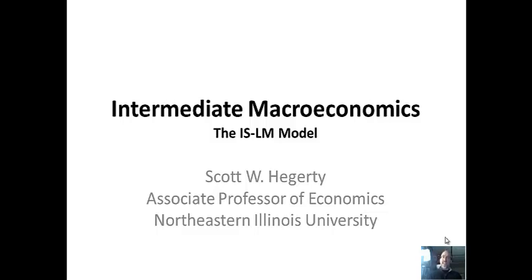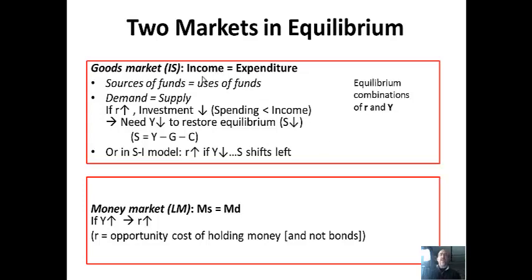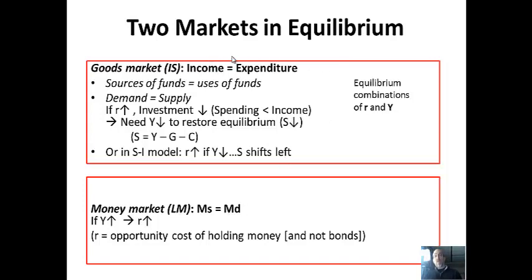To get started, I'll lay out the idea of simultaneous equilibrium. We have two markets: the goods market, which is aggregate demand for real goods and services, and the money market, which is supply and demand for money. The goods market moves more slowly because goods have to be produced and consumed. The money market moves quickly, making disequilibrium very hard. This model gives us equilibrium combinations of interest rate and output, with simultaneous equilibrium where both markets meet at a single point.